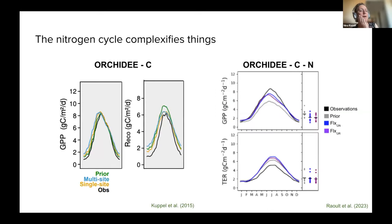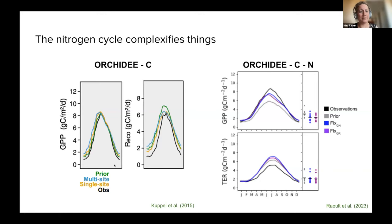We've also now started using the nitrogen cycle in our optimizations, and this makes things a lot more complicated. Looking at a study by Kuppel (2015) on the left showing GPP, and on the right showing respiration — the prior in that study, shown in green, was overestimating especially for respiration. By doing our optimization using the k_soil_c parameter, we were able to match the observations shown in black.